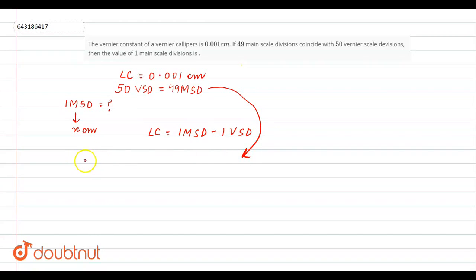1 vernier scale division is equal to 49 divided by 50 times the main scale division, which is x centimeters. We will write it as x centimeters.